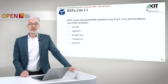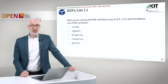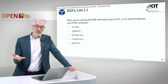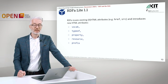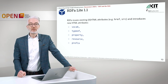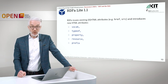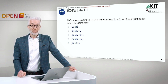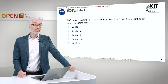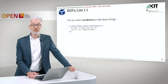So which attributes are we going to use? Some existing HTML attributes are reused — for example, href when giving a URI, or src when giving a URI. On the other hand, we have new attributes: vocab, typeof, property, resource, and prefix.